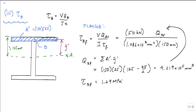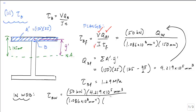We can do the same thing for the web. For tau_BW, the shear force is the same, the first moment of area Q is also the same since we're still at point B, and the moment of inertia doesn't change. The only thing that changes is the thickness at location B is now the web width, which is 20 millimeters. Running through the numbers gives tau_BW equal to 9.71 megapascals.